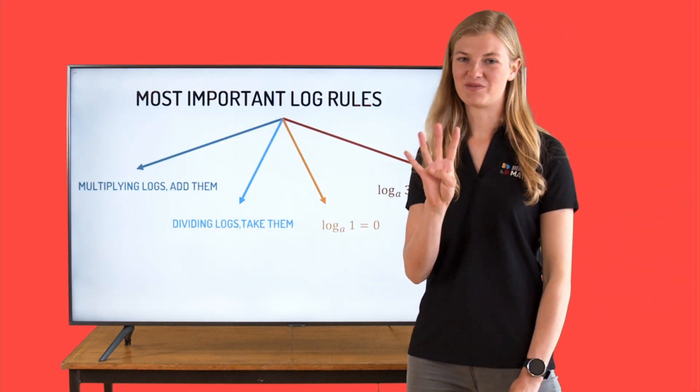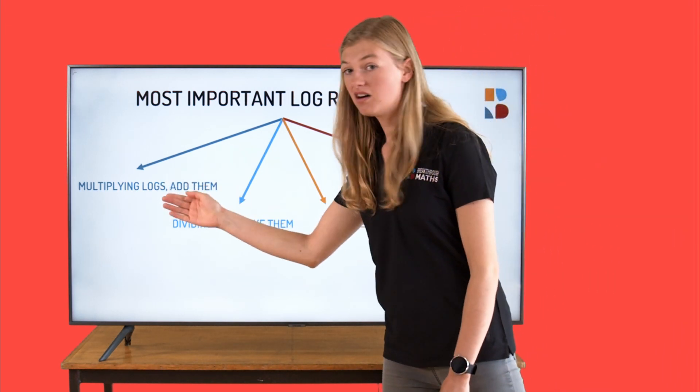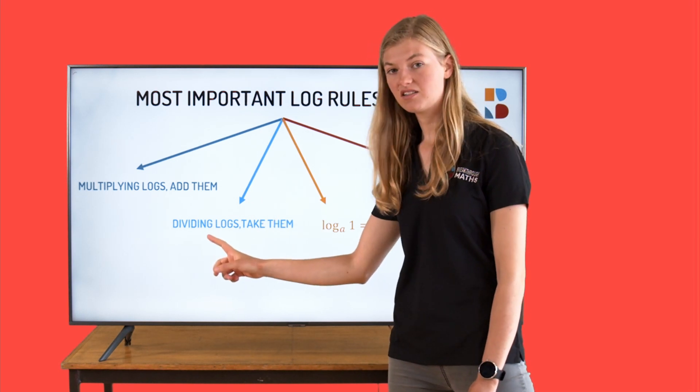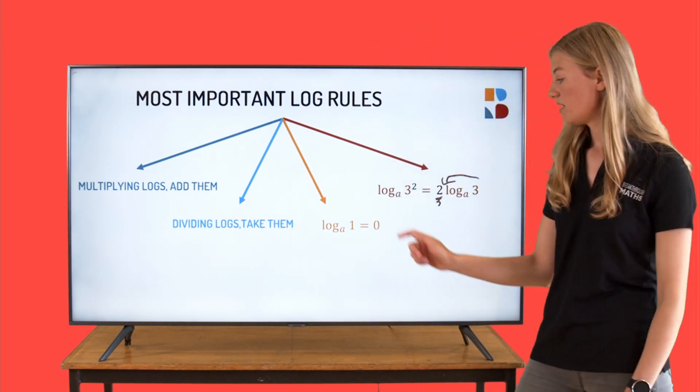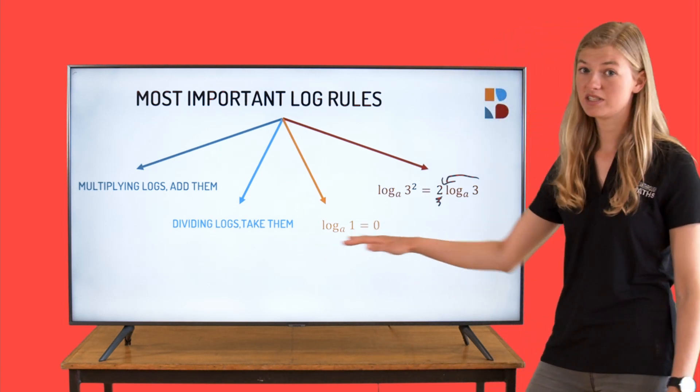There are four main rules to logs. Now, log to the base of anything, one, is always equal to zero.